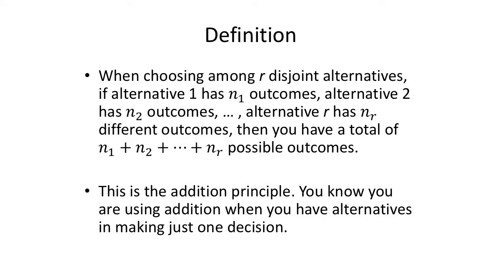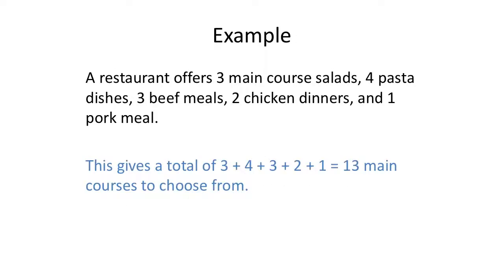Let's look at an example. A restaurant offers three main course salads, four pasta dishes, three beef meals, two chicken dinners, and one pork meal. If I just go in for lunch, I have a choice of three plus four plus three plus two plus one, or 13 main courses to choose from. One out of 13, I'm going to pick my dinner, and that's it.